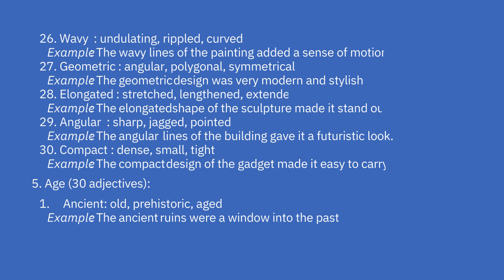28th: elongated — stretched, lengthened, extended. Example: the elongated shape of the sculpture made it stand out. 29th: angular — sharp, jagged, pointed. Example: the angular lines of the building gave it a futuristic look. 30th: compact — dense, small, tight. Example: the compact design of the gadget made it easy to carry.